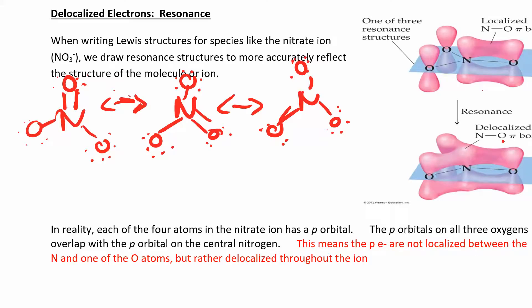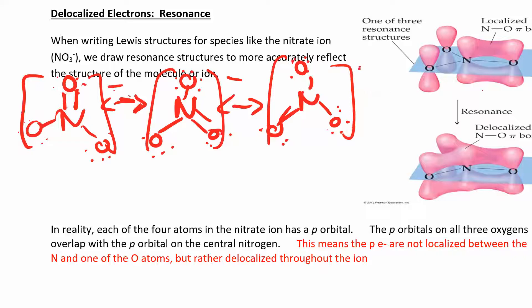Drawing all the resonance structures doesn't show the whole picture — showing delocalized electrons gives a clearer view of what's really happening. All bond angles and bond distances in NO₃⁻ are equal; it's completely symmetric. The p orbitals on each oxygen overlap with the p orbitals on the central nitrogen, creating delocalized electrons not located on any single bond.